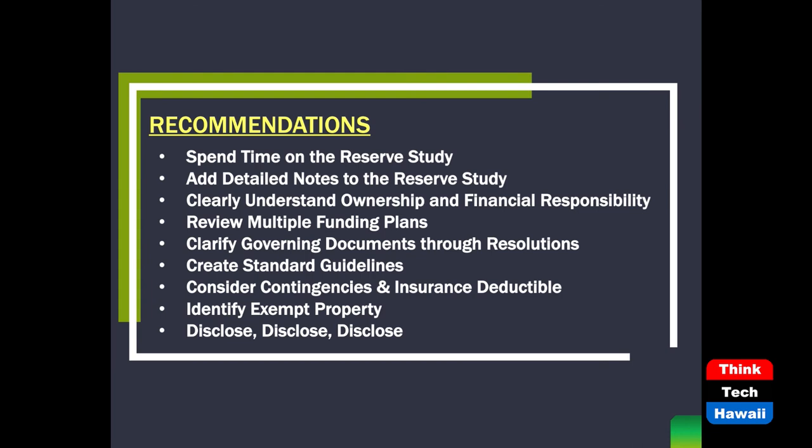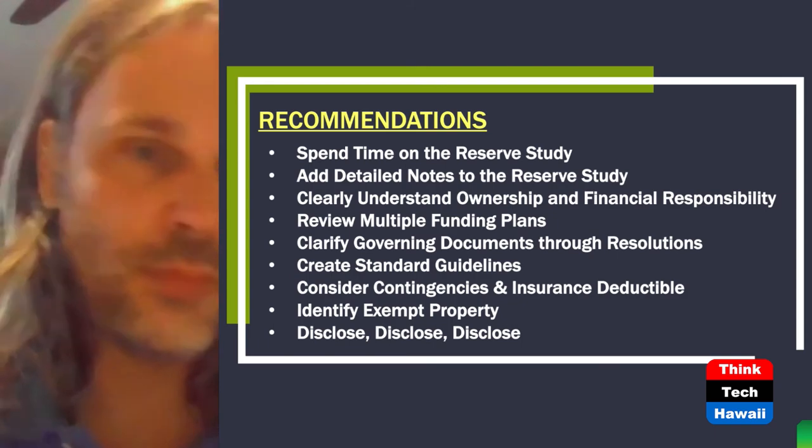To summarize what we went through today: really spend some time on your reserve study. Oftentimes associations spend hours on the operating budget and very little time on the reserve study. Keep in mind a reserve study covers projects that could cost millions of dollars. Add notes to your reserve study for future board members and property managers — write down who the vendor was, how much work was done, what the basic scope of work was. Clearly understand the ownership and financial responsibility of the homeowner versus the association. Understand that property dividing line so you can properly save accordingly if those windows or doors belong to you.